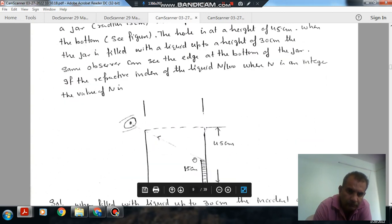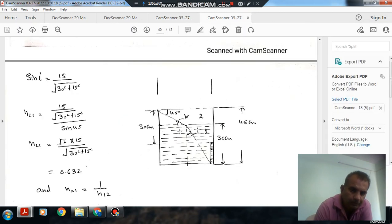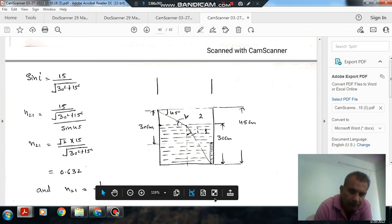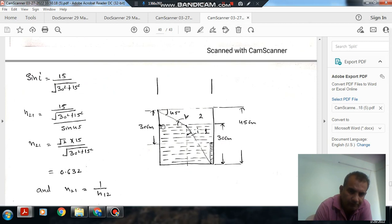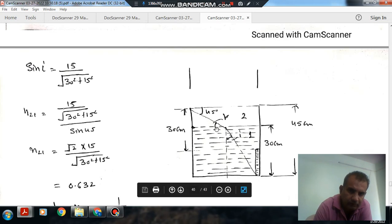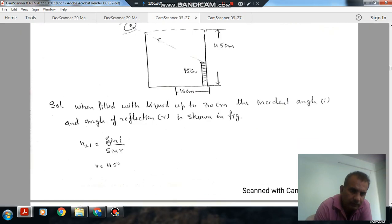R equals 45 because this is your 30 cm. And this is also your 30 cm. So this angle should be 45 degrees. If this angle is 45, then this gamma is also 45.